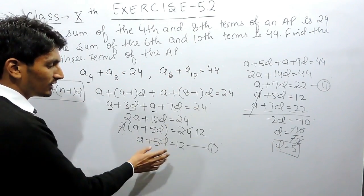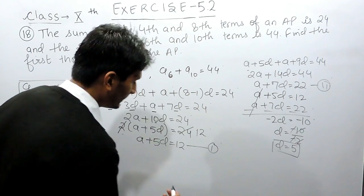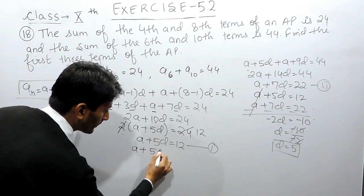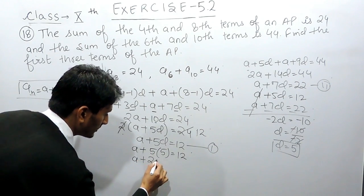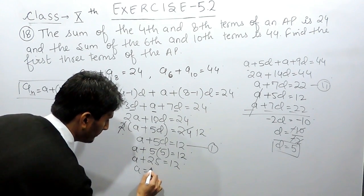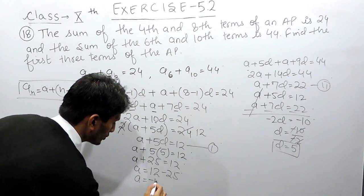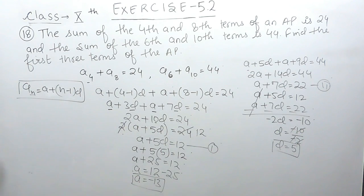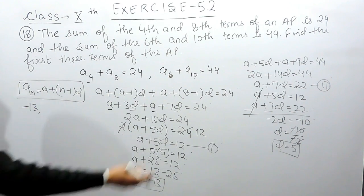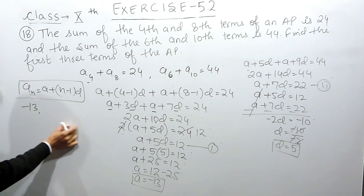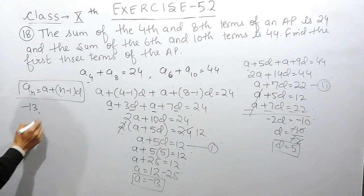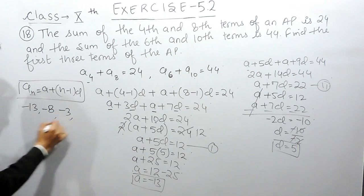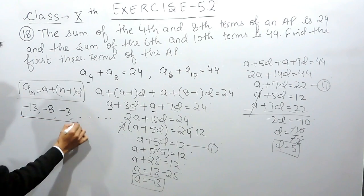Substituting the value of D into the first equation: A plus 5 times 5 equals 12, so A plus 25 equals 12, giving A equals 12 minus 25, which is minus 13. The first term of the AP is minus 13, and since the common difference is 5, the first three terms are minus 13, minus 8, and minus 3.